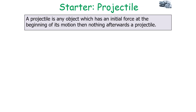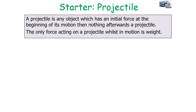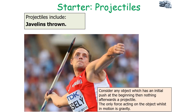A projectile is any object which has an initial force at the beginning of its motion and then nothing afterwards. So the only force acting on a projectile whilst in motion is weight. Examples of projectiles include javelins being thrown. Any object which has an initial push at the beginning and then nothing afterwards is a projectile — the only force that acts on it is gravity or weight.